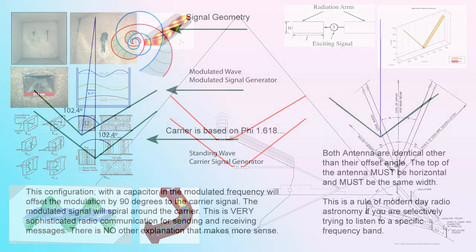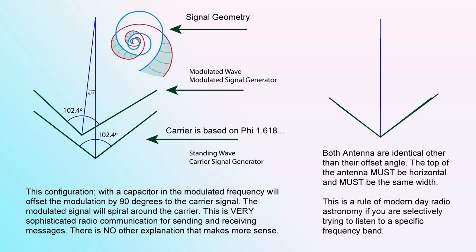Another interesting detail: looking at these two antenna configurations, they have the same angle relative to each other — roughly 102.4 degrees between them. When you map them on top of each other, they're both pointing to the same point on the Great Pyramid: the apex. Having one offset to the other kind of induces a spiral around the carrier signal, creating a spiral-like geometry.